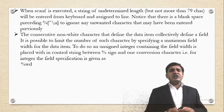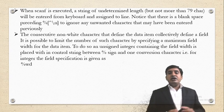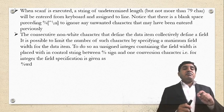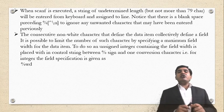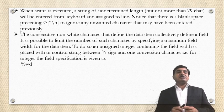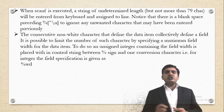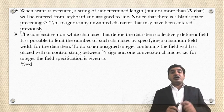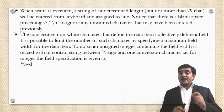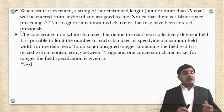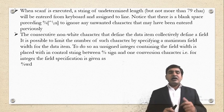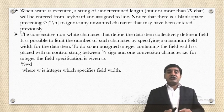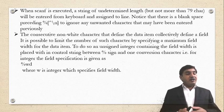The consecutive non-white characters that define the data item collectively define a field. It is possible to limit the number of such characters by specifying the maximum field width for the data item. To do so, an unsigned integer containing the field width is placed within the control string between the % sign and the conversion character. For integers, the field specification is given as %wd, where w represents the integer specifying the field width.